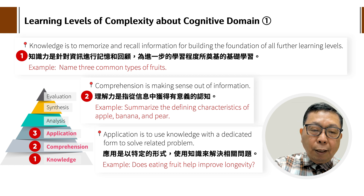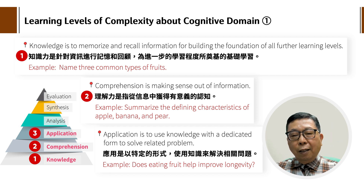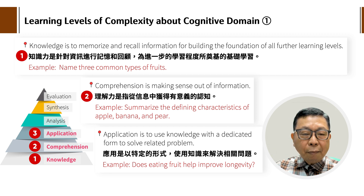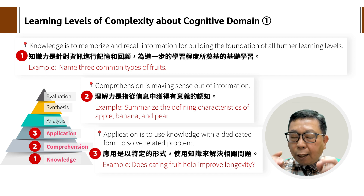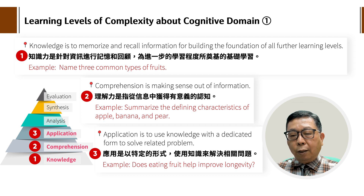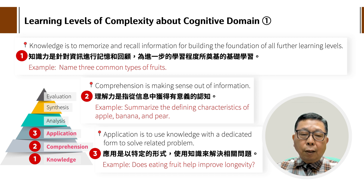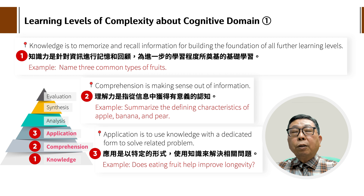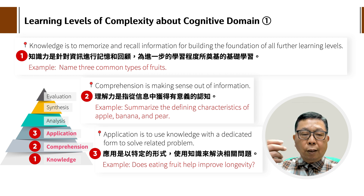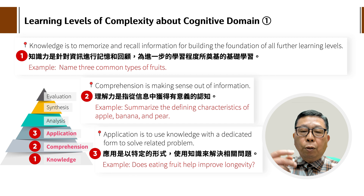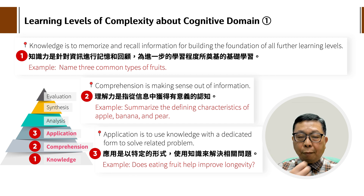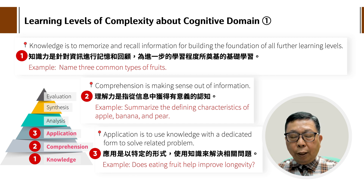比如我前几天有看到一个网红在介绍十种对人有健康的食物。所以Comprehension就是你要make sense，为了你的健康慢慢感觉这些水果到底是什么形态。第三种是应用（Application），就是以特定的形式使用知识来解决相关的问题，比如说用数学知识去应用到某个问题上面。